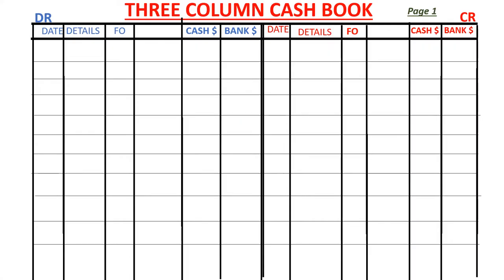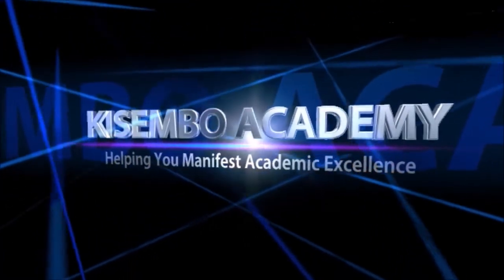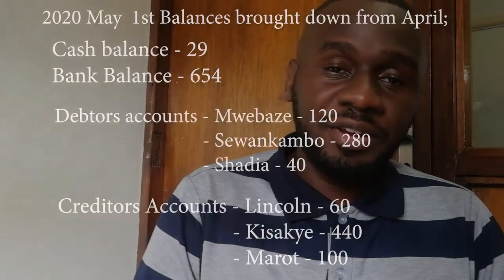The only new thing we are introducing here is the discounts columns. On the debit side of the cash book, as you can see on your screen, we are going to introduce a discounts column, and specifically on the debit side, we shall call it the discounts allowed column. On the credit side, we shall be introducing the discounts received column. We discussed what discounts allowed and discounts received means in our previous session. The link to that is in the description below. In today's session, we get to do a worked example regarding this.